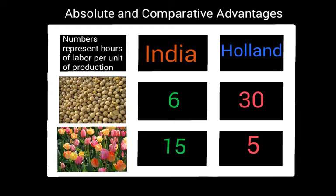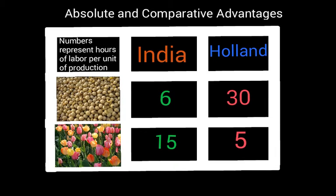Let's first assume that they produce both products equally and that there is no specialization of labor. That means there is no international trade going on between these two countries regarding these two products. But then let's take a look at what would happen if they did specialize and if they eventually did start to trade.